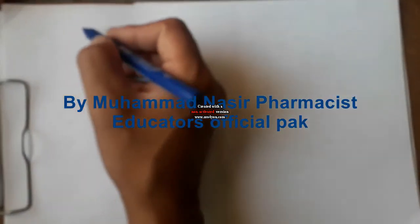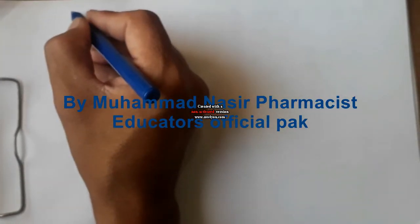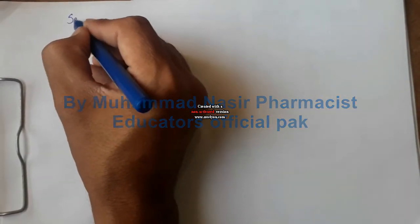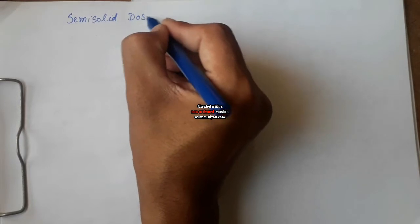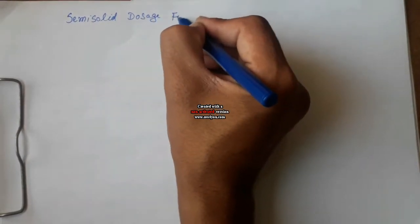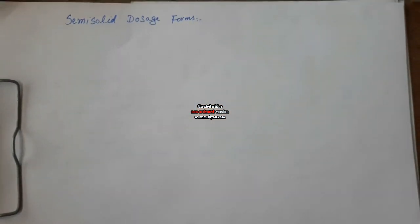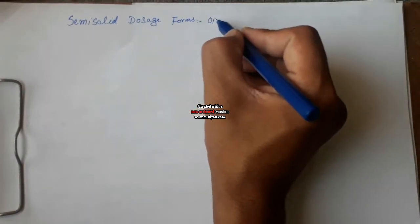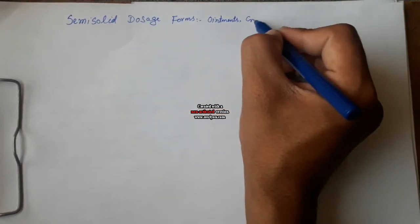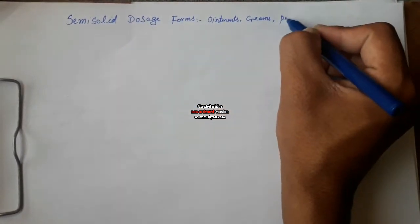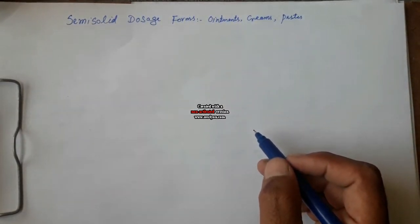This is a continuation of our percentage calculation series. Today we will discuss some calculations regarding the semi-solid dosage form. Semi-solid dosage forms are dosage forms which are in a semi-solid state, like ointments, creams, and pastes — these are some semi-solid dosage forms.